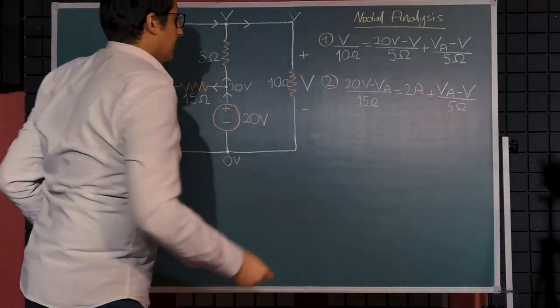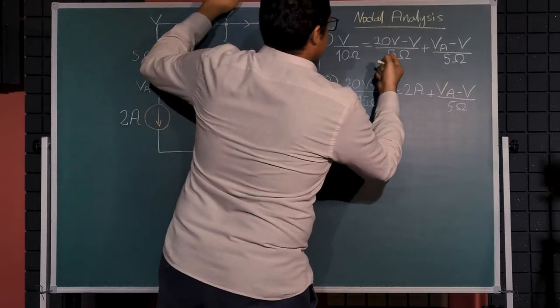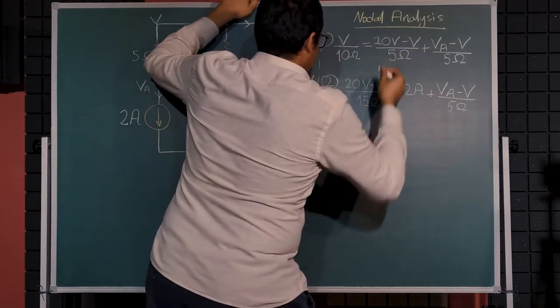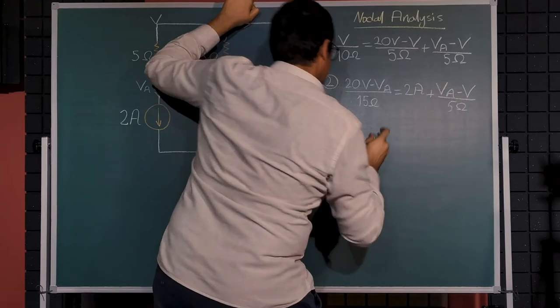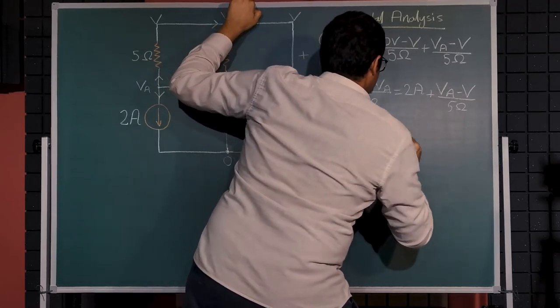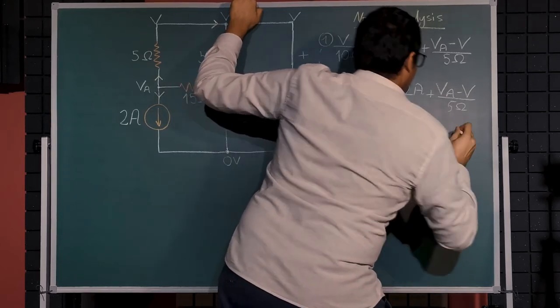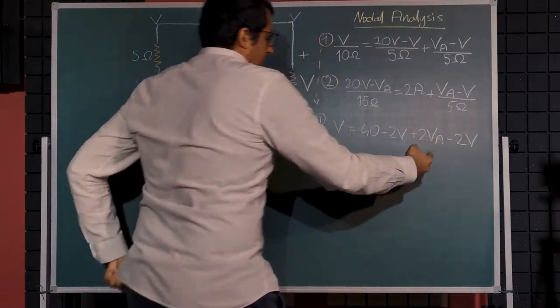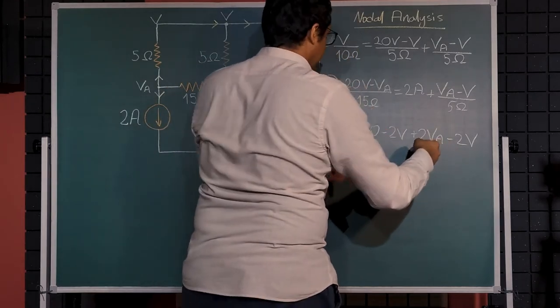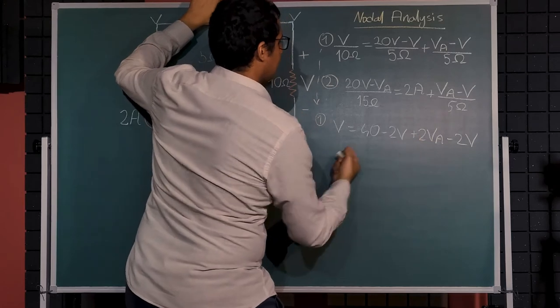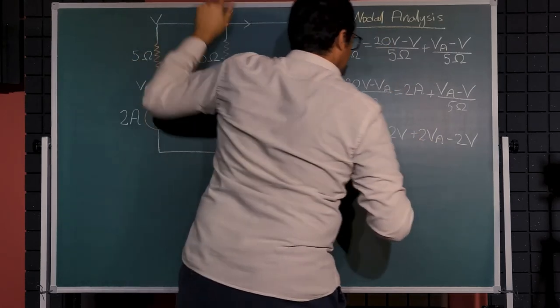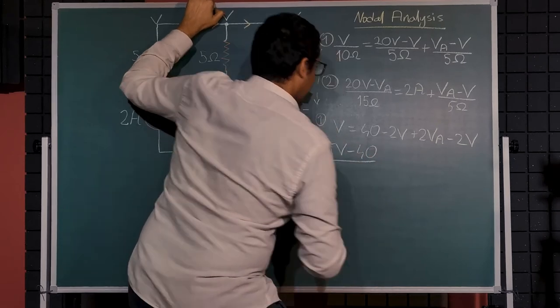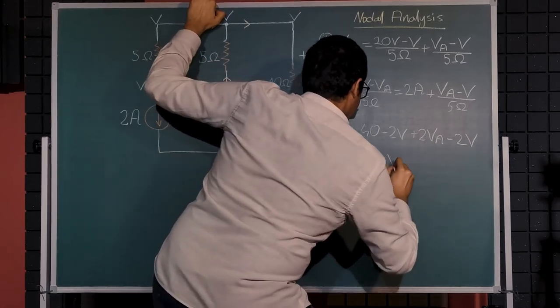If we try to simplify equation one, let's multiply this side by two, which will be v equals, I will drop the units for the sake of simplicity, multiply by two: 40 minus 2v plus 2va minus 2v. I will rearrange the terms since I would like to write va in terms of v. This will give us 5v minus 40 over 2 equals va.